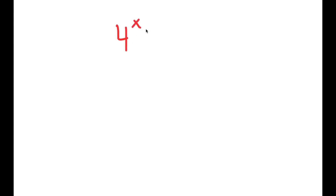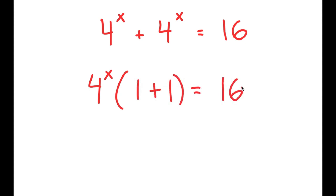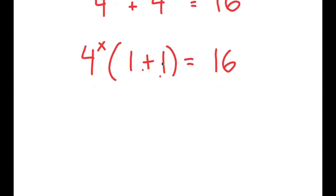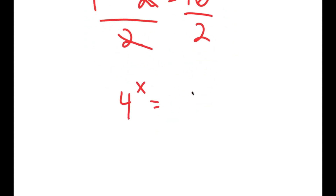In this video, I'm going to solve the equation 4 to the power of x plus 4 to the power of x is equal to 16. To solve this, I'm going to first start by factoring out 4 to the power of x from my left-hand side. So I get 4 to the power of x times 1 plus 1 is equal to 16. Now, 1 plus 1 is 2, so I get 4 to the power of x times 2 is equal to 16. And if I divide both sides by 2, these cancel out, and I get 4 to the power of x is equal to 8.